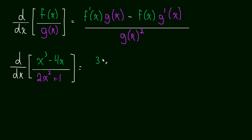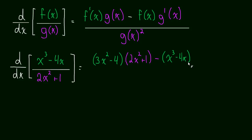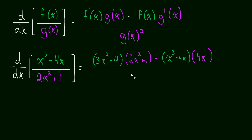The derivative of the numerator is going to be 3x squared minus 4, times by the denominator just left alone — so that's 2x squared plus 1. Then we subtract the numerator just left alone, so that's x cubed minus 4x, times by the derivative of the denominator, which is going to be 4x — the derivative of 2x squared plus 1. And then we take all of that and divide by the denominator squared — so that's 2x squared plus 1, squared.